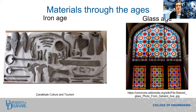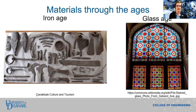The next material to become important in human history was glass. Glass has existed for millennia, but mass production of glass became widespread only in the 13th century. Glass is transparent to light, it's chemically inert, it can withstand high temperatures, and it can be recycled endlessly, making it an important material for a wide range of applications.